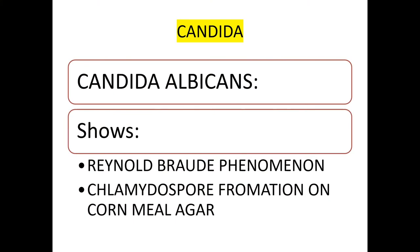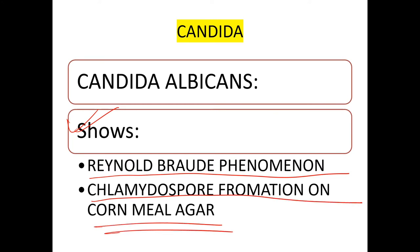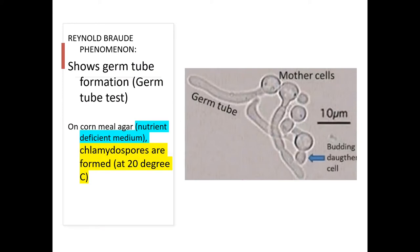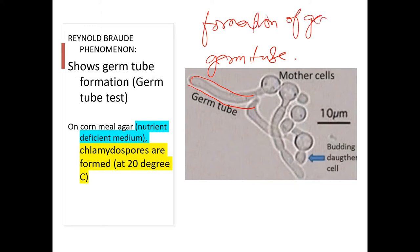We will start with Candida albicans. Candida albicans shows Reynolds-Broad phenomenon and chlamydospore formation on cornmeal agar. The Reynolds-Broad phenomenon refers to germ tube formation — you can see these tube-like structures in the picture. These are known as germ tubes, and their formation is called the Reynolds-Broad phenomenon.